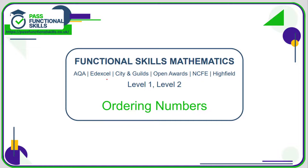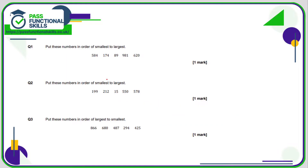Let's take a look at the ordering numbers questions. All of these questions are non-calculator. Question number one: put them in order, smallest to largest. The key thing is just to check — do they all have the same number of digits? Here we've got three-digit numbers, but there's one two-digit number, so the two-digit number is the smallest.